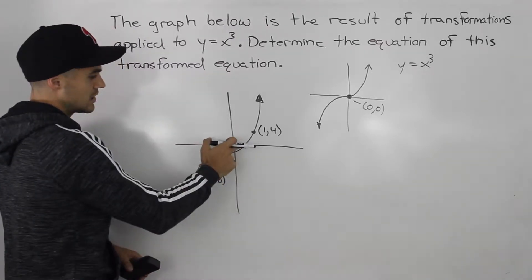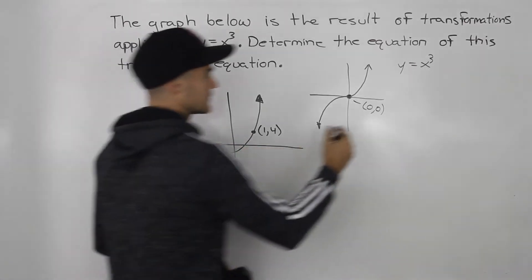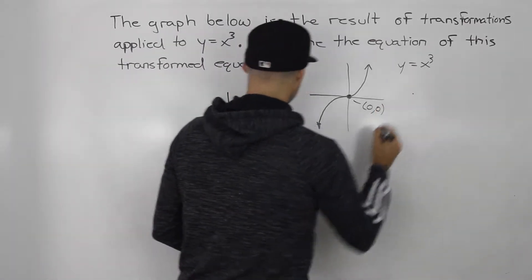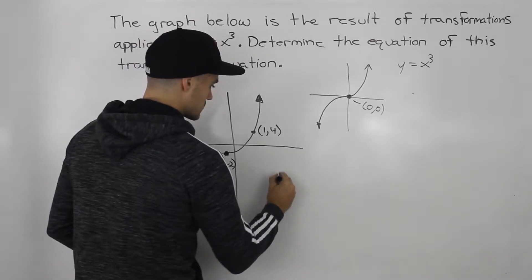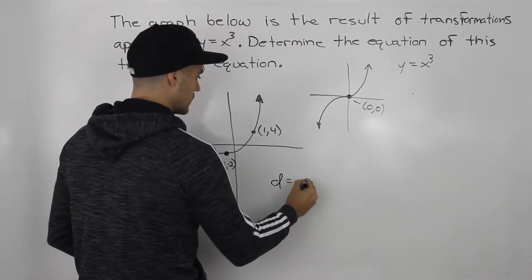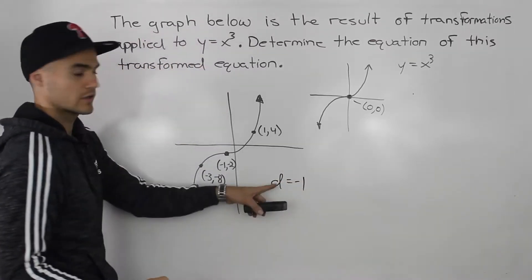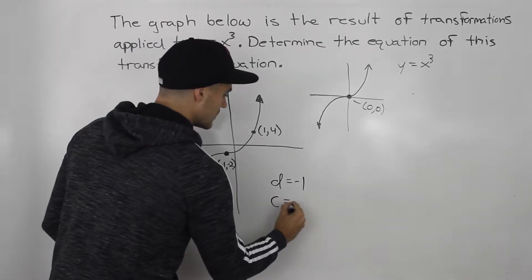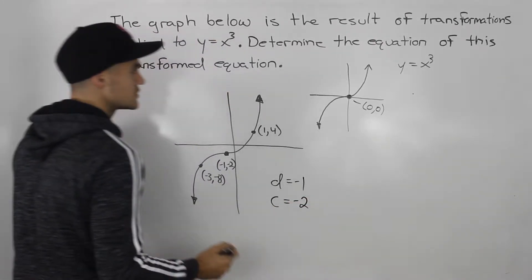So because it got shifted 1 unit to the left, we know the d value. Let's actually write the transformation values here. So the d value we know is going to be negative 1, one unit to the left. And then the c value is going to be negative 2.